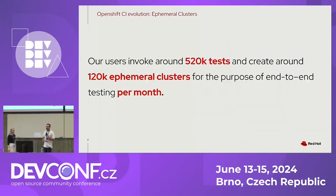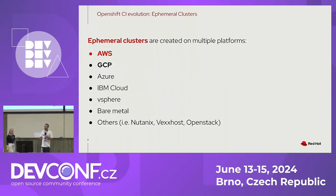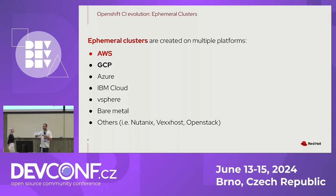Beyond the static part, there is also a dynamic part — the concept of ephemeral clusters. Our users invoke a lot of tests, and a subset of those tests use ephemeral clusters. Those clusters live for a short time, are made to test something, and then they die. The numbers you see are per month, so it's a really large number. We create ephemeral clusters daily on multiple platforms — AWS is the biggest, but we also have GCP, Azure, IBM Cloud, vSphere, bare metal, and others.